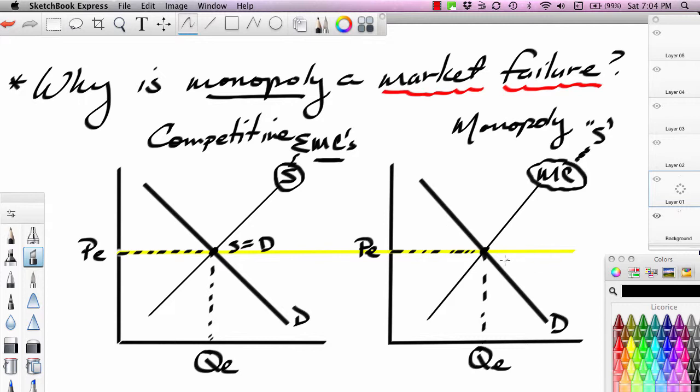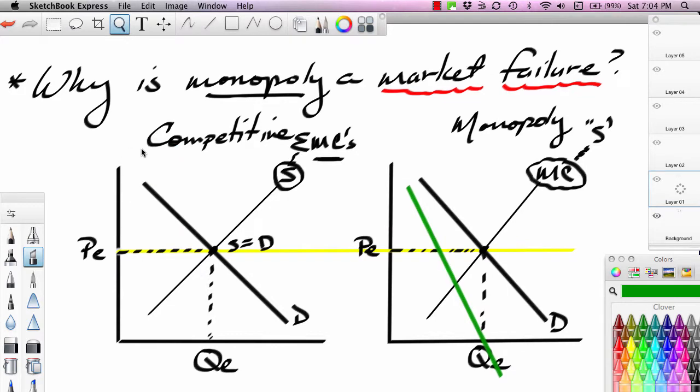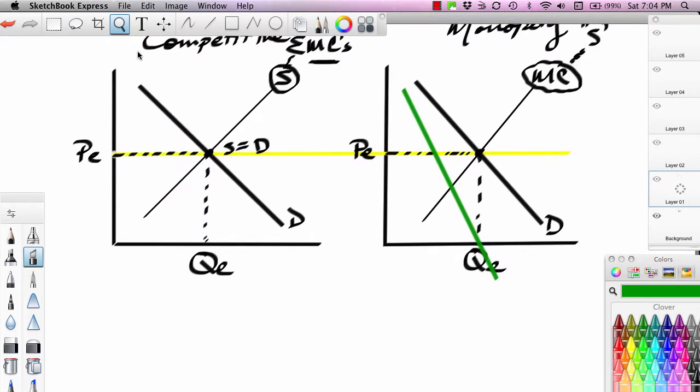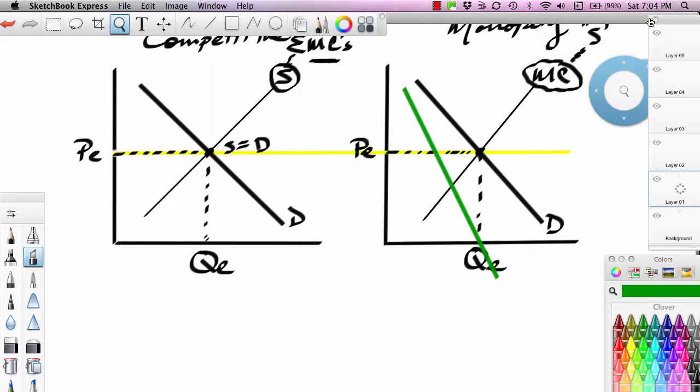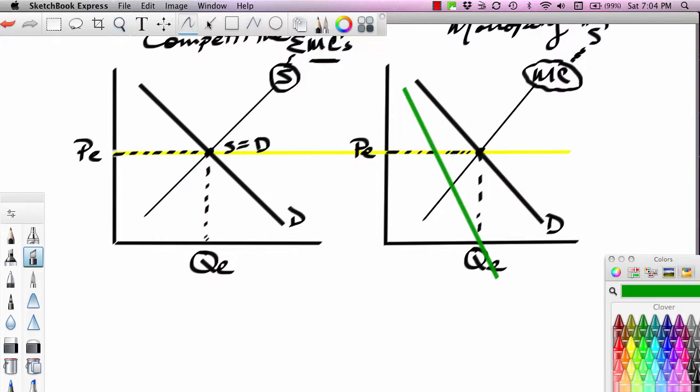Now, does the monopolist operate where MC equals demand or where supply equals demand? The answer is no. To maximize profits, remember the monopoly operates where MC equals MR. So let me go ahead and put the MR curve in here. And I'm going to scroll up here a little bit to help me show you this. So, where does the monopolist operate? The monopolist operates where MR equals MC. So we find where MR equals MC.